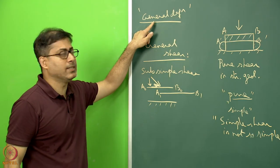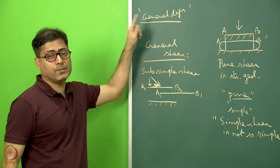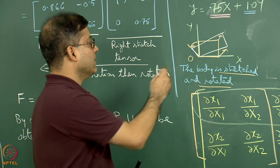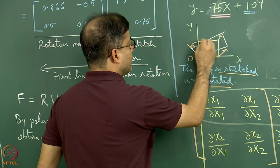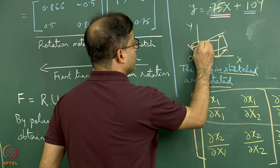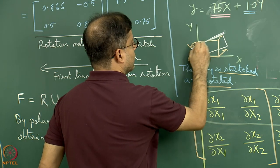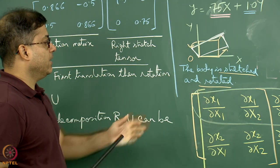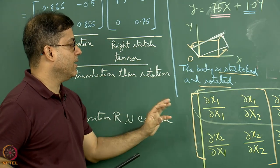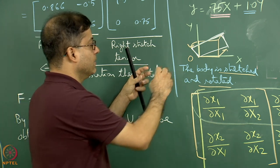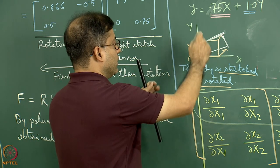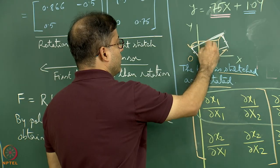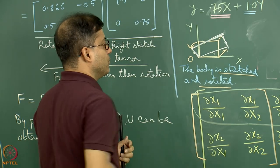A correction to the diagram: these two lines are parallel to each other and those two lines are also parallel to each other. When I said the orange rectangle has stretched and rotated — first stretching then rotation — this leads to two sides mutually parallel and the other two sides also mutually parallel, forming a parallelogram.